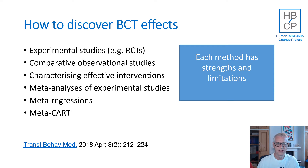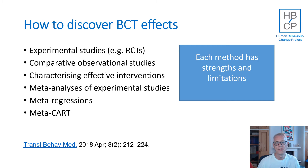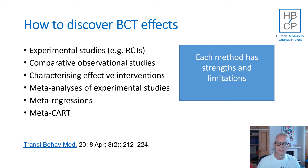Each type of study has strengths and limitations and probably no single study type will be sufficient to provide a definitive answer. When talking about BCT effectiveness, we're only talking about this with regard to a specific behaviour, population and setting and when delivered in a particular way. The most powerful way is through experiments in which individual BCTs are included or excluded. Factorial experiments can be used to do this with several BCTs at once. Less powerful but often more practical are comparative observational studies in which we take large numbers of interventions containing different BCTs and compare outcomes across those interventions.